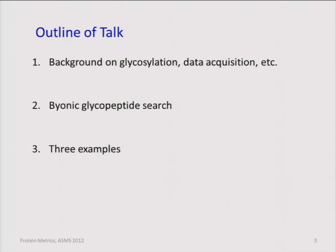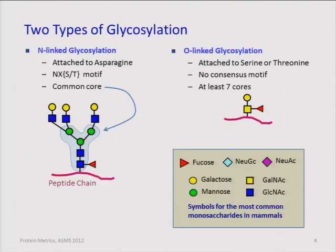I'm going to start with background material on glycosylation — textbook stuff. There are two types of glycosylation. N-linked glycosylation is linked through the nitrogen on asparagine. The two things to know about that are: there's a sequence motif — asparagine, anything but proline, and then serine or threonine.